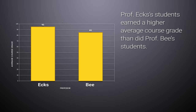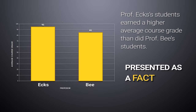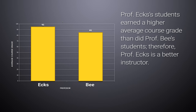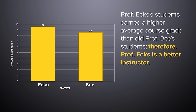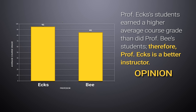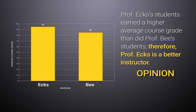Professor X's students earned a higher average course grade than did Professor B's students — again, I can check the information in the graph; it's presented as a fact. But saying 'Professor X is a better instructor' is an opinion. It's possible Professor X did a better job, but it's also possible that Professor B did a good job too, but his students didn't do very well for some reason. This opinion is based on the fact that one group of students did better than the other, but it's still just an opinion.